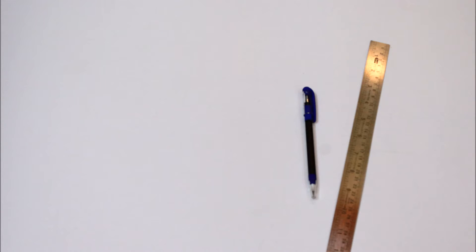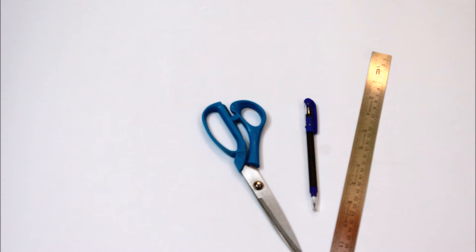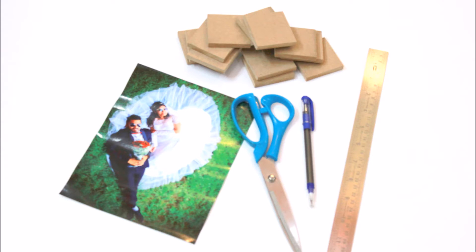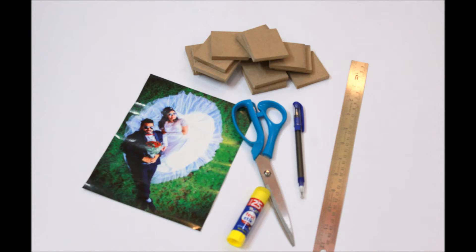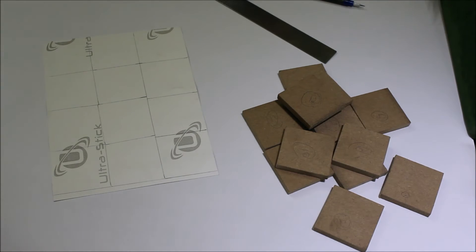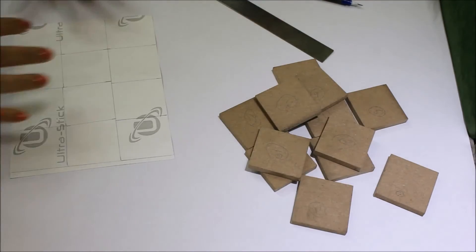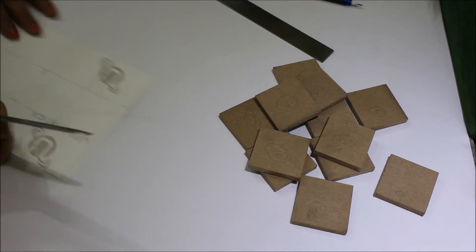For this, you would require a pencil, a ruler, scissors, some wooden blocks, a good quality photograph, and glue. I've got my wooden blocks cut in the size of 2x2 and marked the same on the back of the photograph. You can get it cut into any size of your choice.